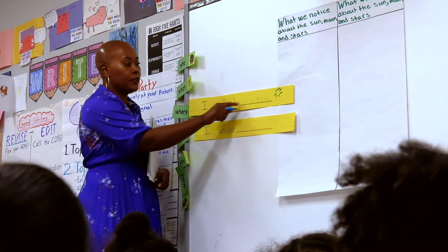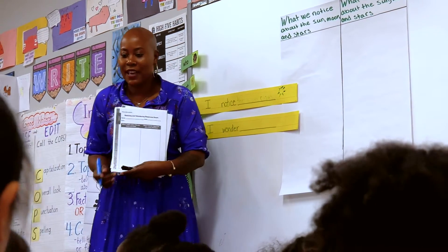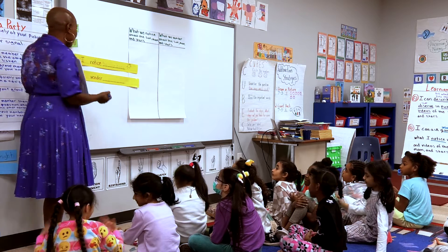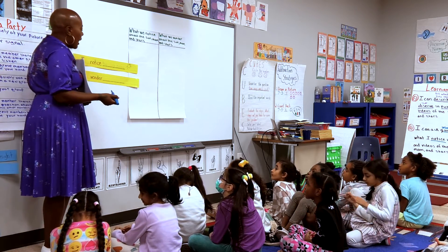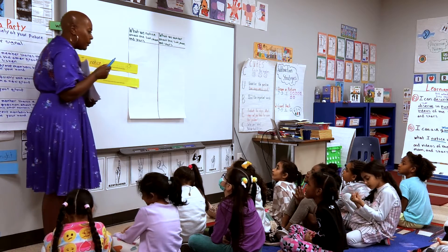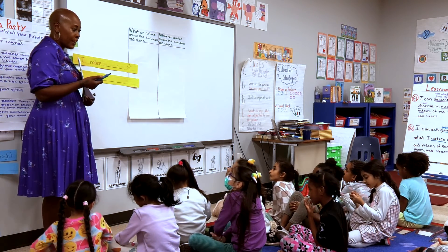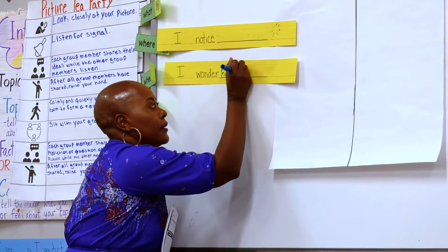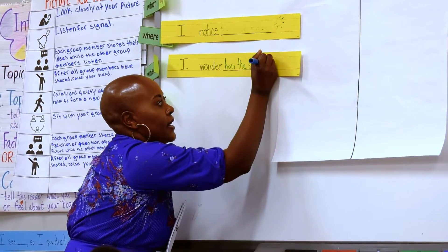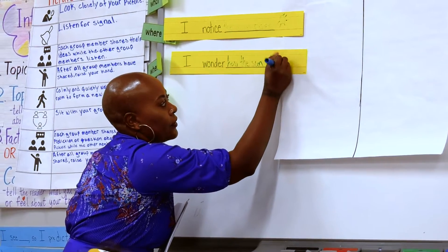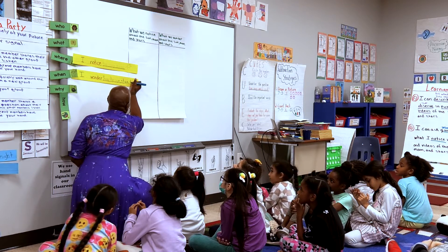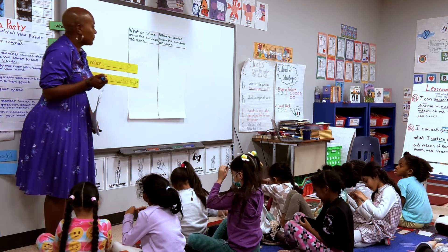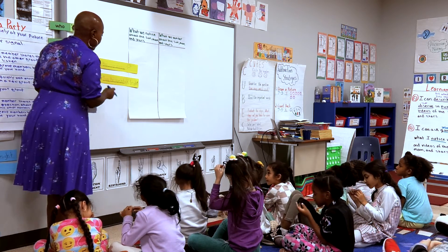After I write 'I notice the sun rises,' I might then have a wonder. So this column says what we wonder about the sun, moon, and stars. A wonder I have is: I wonder how the sun stays so bright. So I'm going to write: I wonder how the sun stays bright. And then I can draw a picture of that.